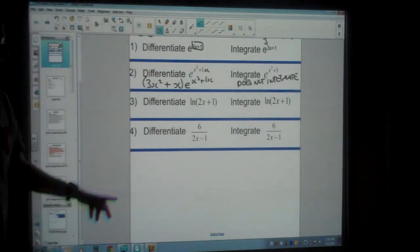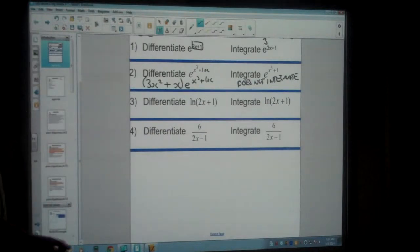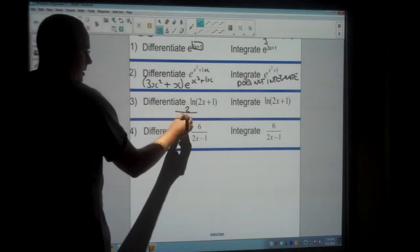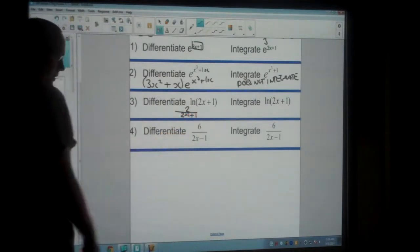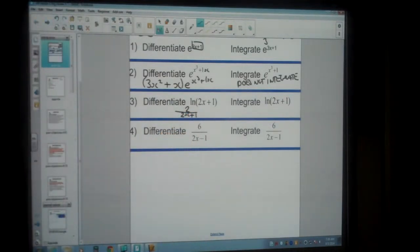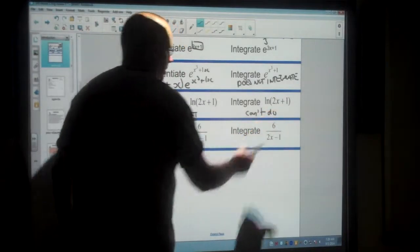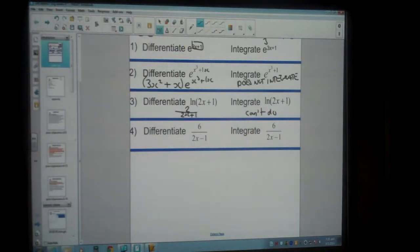Now when we come on to the ln function, to differentiate the ln function, you differentiate what the ln is. So the differential of 2x plus 1 is 2. And then you write it over what the original function was. Now integration of ln functions we're going to cover later, but right now we'll just have to say we can't do. I believe that's chapter 18 or chapter 19.